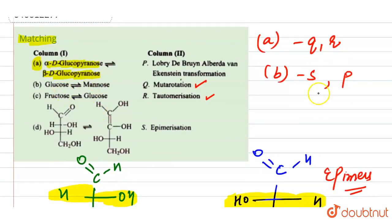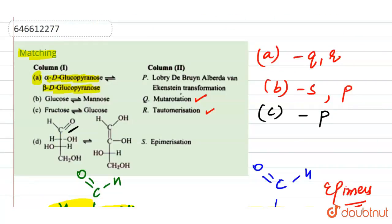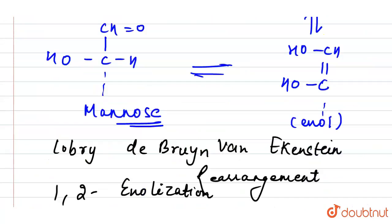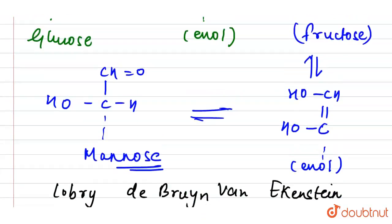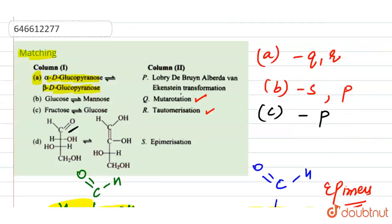So for option B we can say S and P. For option C — fructose to glucose — we have already seen that is formed in the Lobry de Bruyn reaction; that does not represent the epimer, so for C the answer is P.